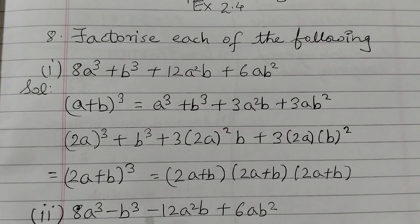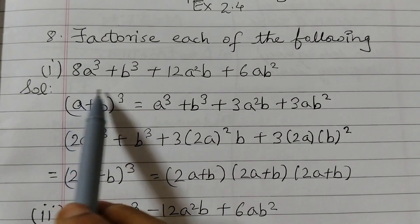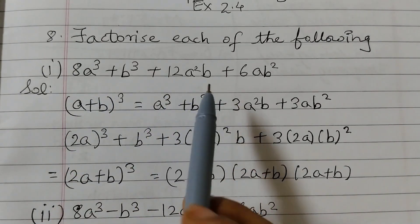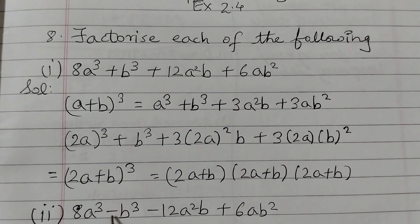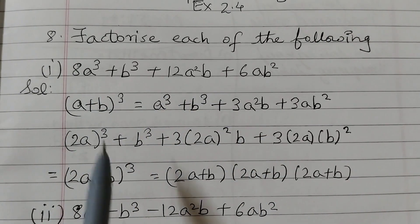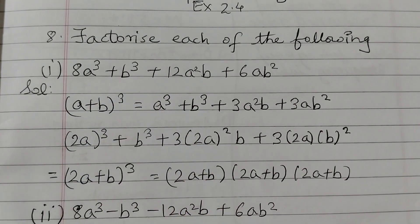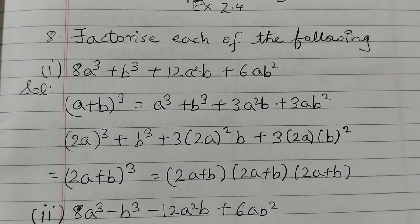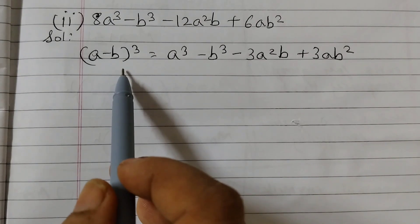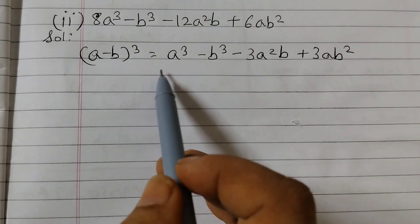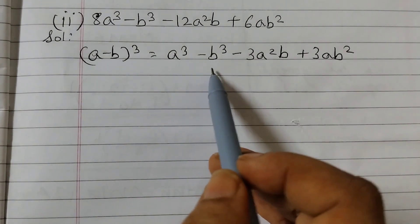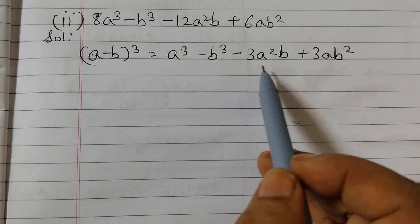The second one is 8a cubed minus b cubed minus 12a squared b plus 6ab squared. If you observe carefully, the same terms are being used but with a sign change — two minus signs and one plus. So the identity we will use is (a - b)³ = a³ - b³ - 3a²b + 3ab².